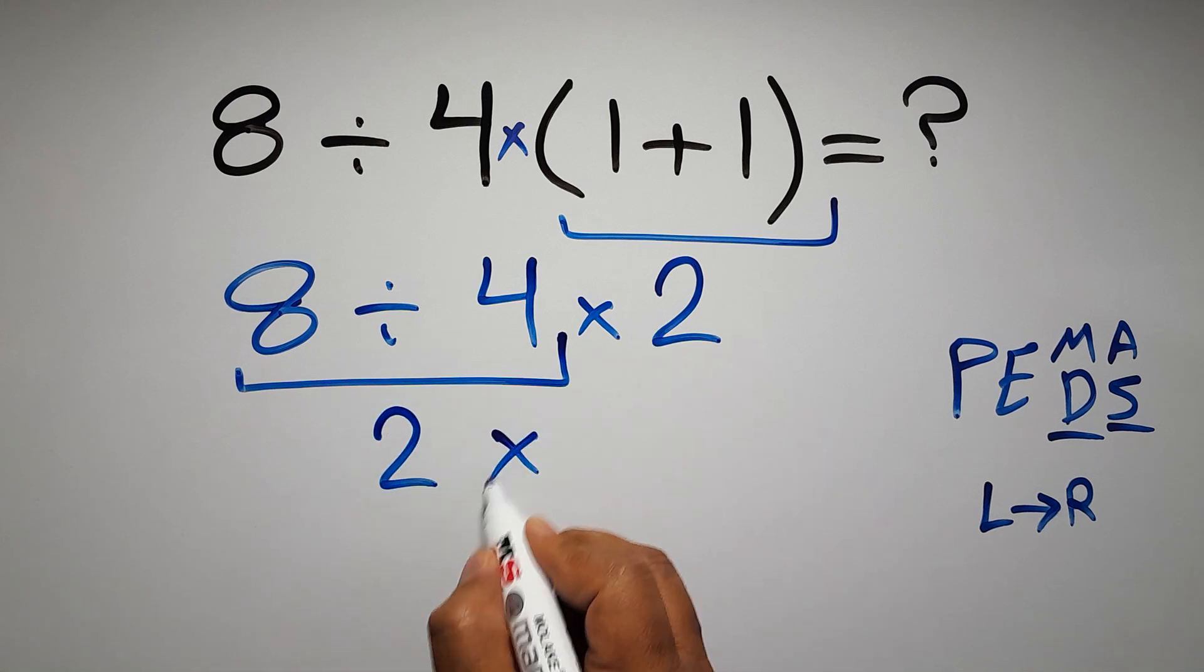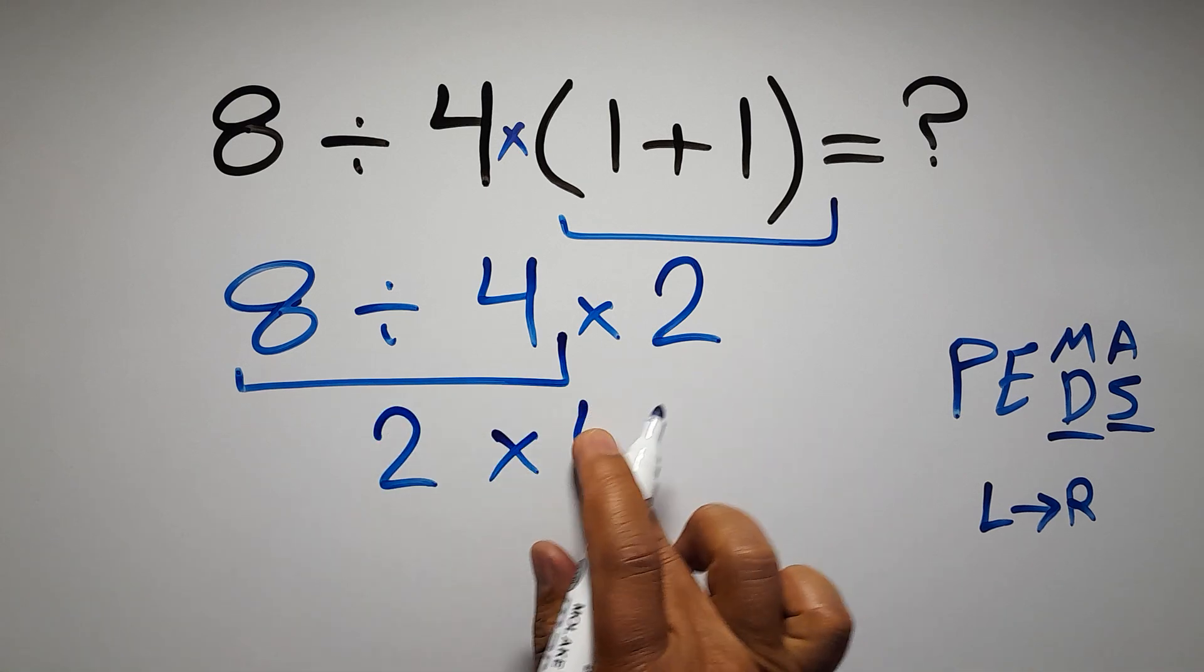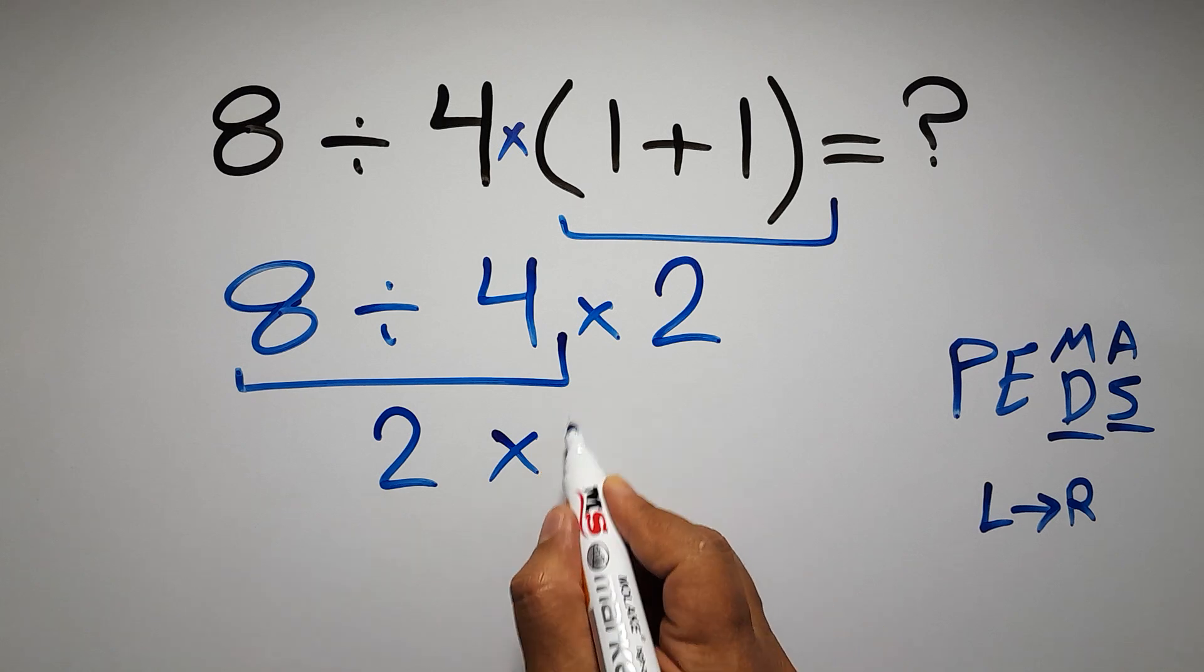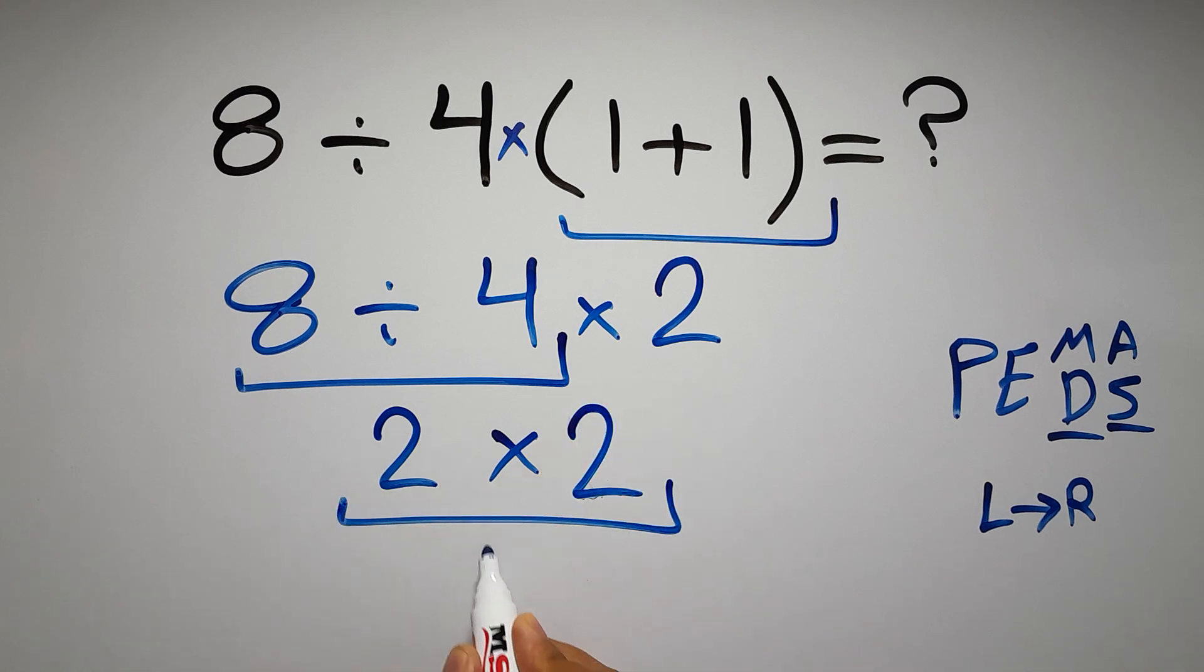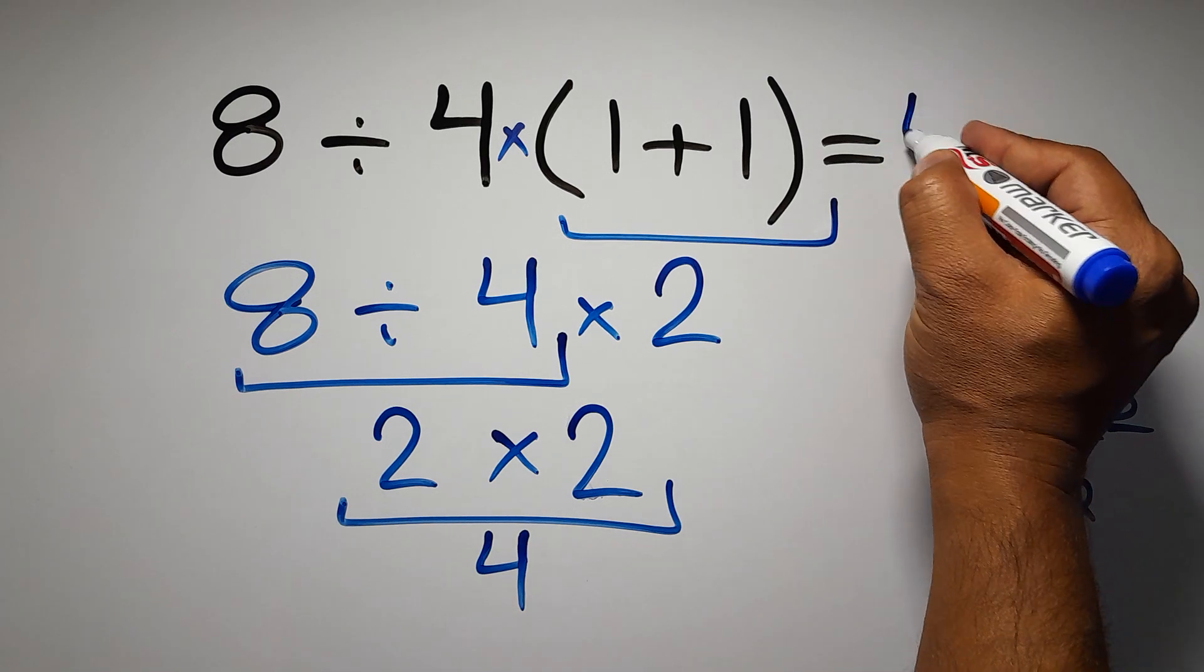So 2 times 2, which equals 4. And this is our final answer to this problem. The correct answer is 4.